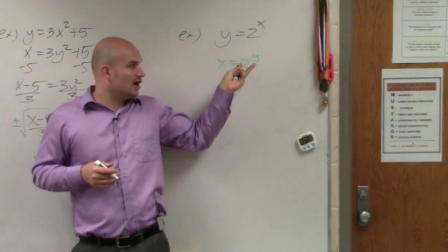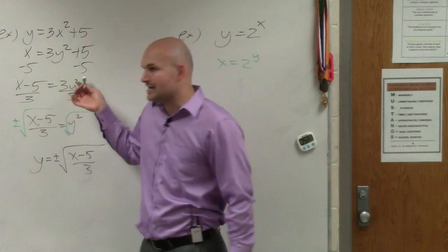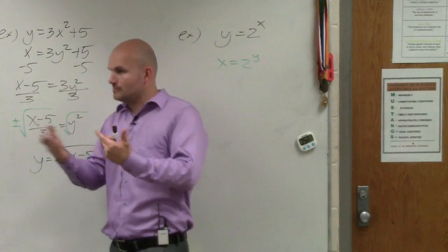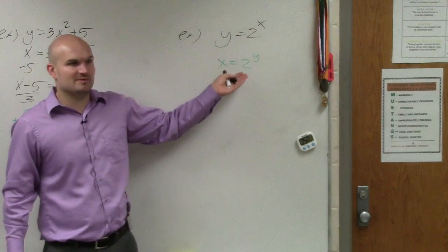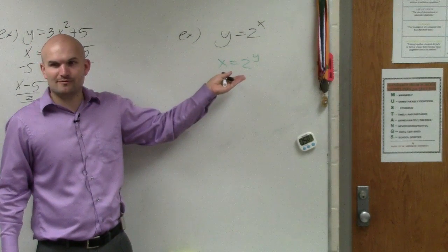You know, how do we undo? Raising something to the second power is easy. We took the square root. If we're going to raise something to the third power, we take the third root, right? So what inverse operation do we have when we have a number and we're raising it to the y power?